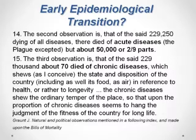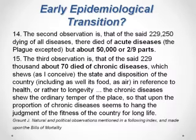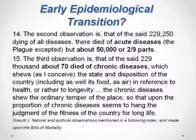Another area where we can thank John Graunt is in introducing the idea of epidemiological transition. In one of his bills of mortality he pointed out that of the 230,000 deaths he examined, about 50,000 — two in nine — were acute diseases, and about 70,000 died of chronic diseases. Interestingly, that terminology has remained intact over 350 years: acute and chronic are still very much part of our vocabulary and underpin much of the discussion about how mortality has changed.